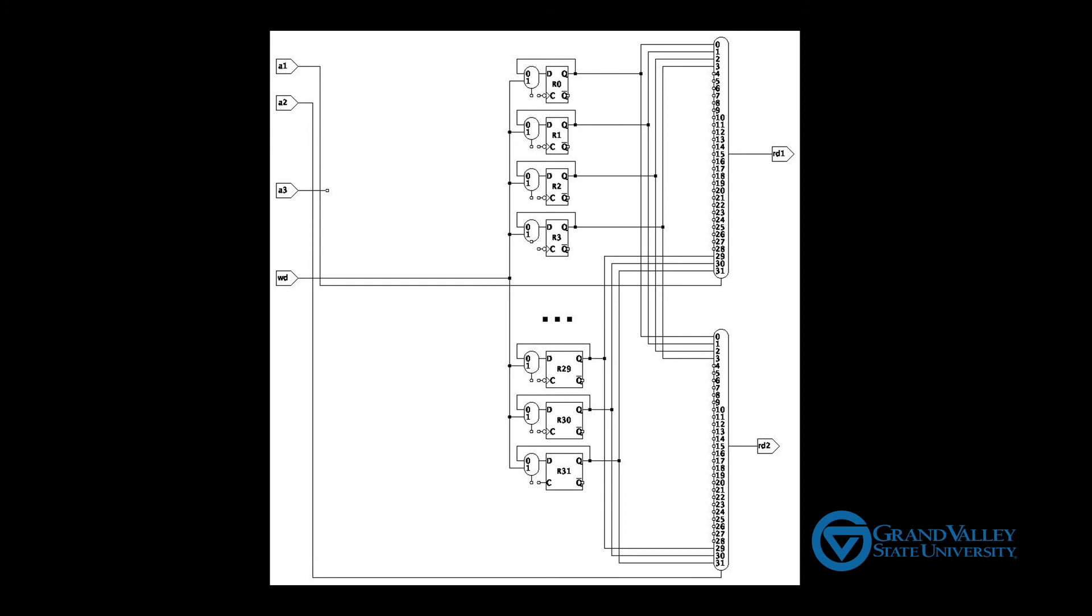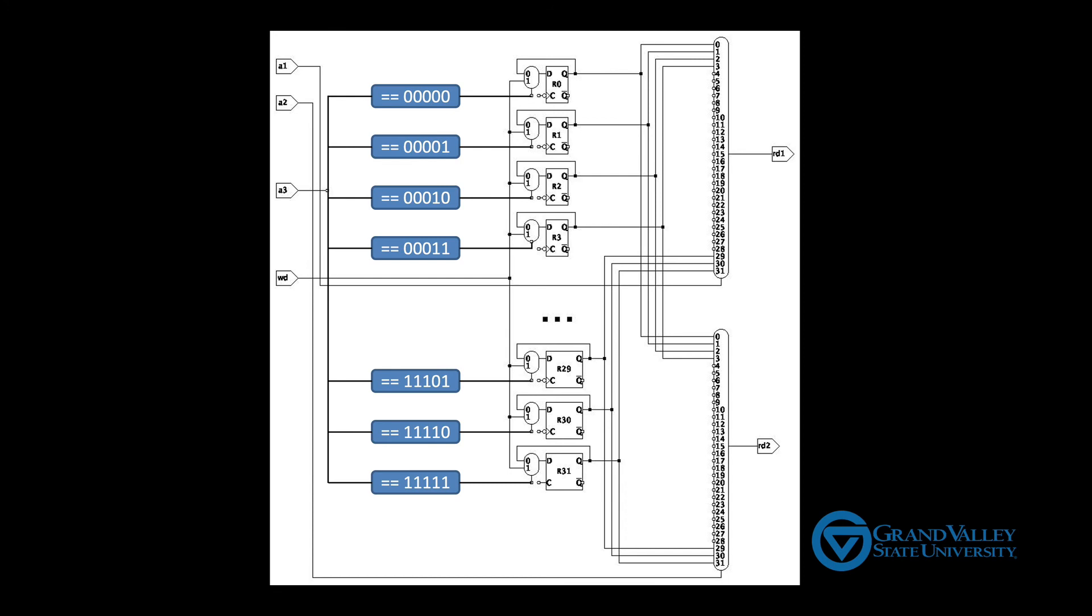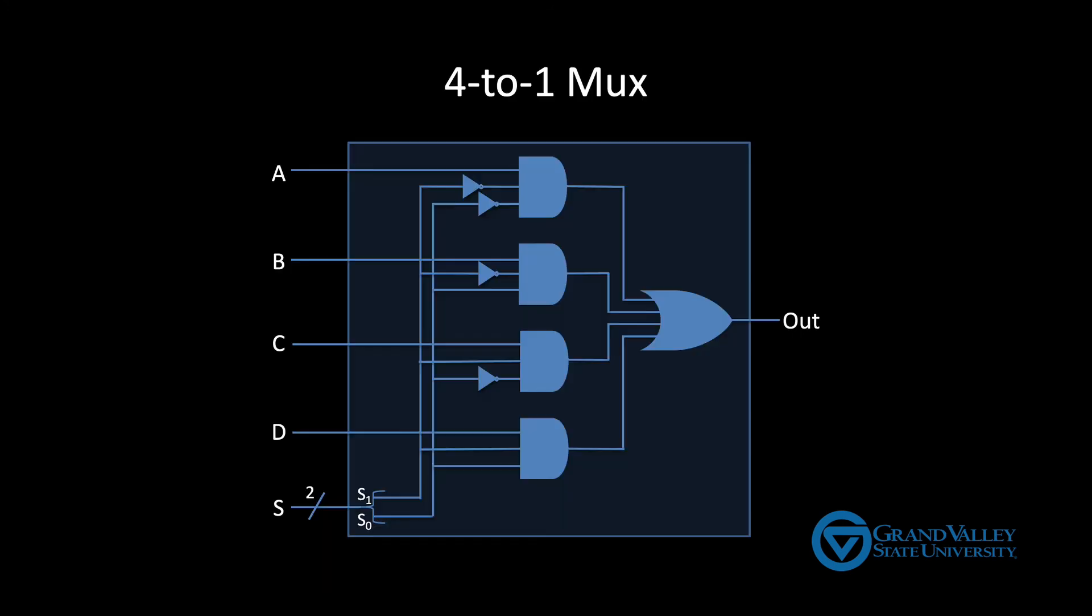The key idea here is that the enable input is checking to see if A3 is the binary encoding of the corresponding register number. For example, the enable to R0 is looking to see if A3 is equal to 0, 0, 0, 0, 0. R1 is looking to see if A3 is equal to 0, 0, 0, 0, 1, and so on. We implement this is-equal check the same way we do when implementing a MUX, by placing a pattern of NOT gates in front of the AND gate such that they represent the desired number in binary.